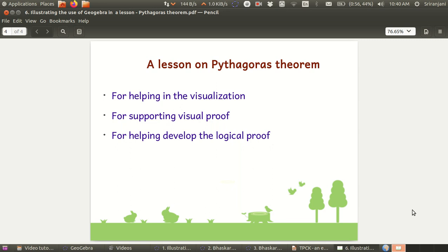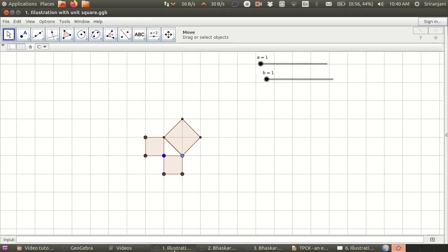We will start with the illustration of the Pythagoras Theorem. You have a very simple file like this which has been created using two sliders. You can use this to help students state the theorem. You can ask them to look at the two squares which have been constructed along the sides of a given right triangle and also the square that's been constructed on the hypotenuse and ask them to visualize the relationship.